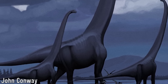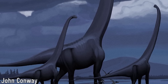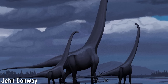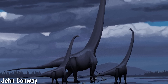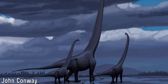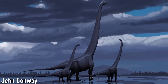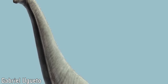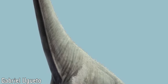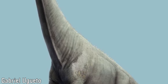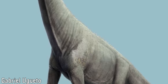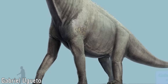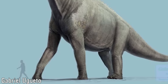Brachiosaurus had a more robust humerus in comparison with their femur than in Giraffatitan, showing that they may have carried a greater proportion of their weight on their forelimbs than their African counterparts. The arms of Brachiosaurus were comparatively more proportioned in their shoulders and being longer, deeper, and bulkier regarding their limbs, alongside their neck bones being more robust.